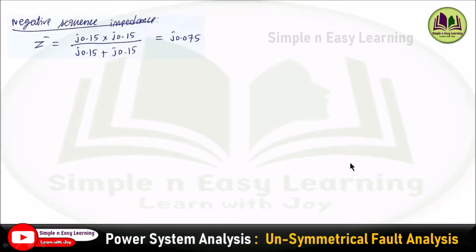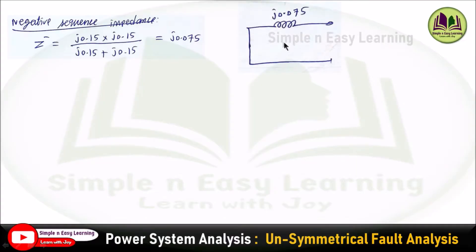Similarly, for negative sequence impedance, both impedances are in parallel. Doing the parallel combination, you get J0.075. The negative sequence network consists of an impedance alone with value J0.075.